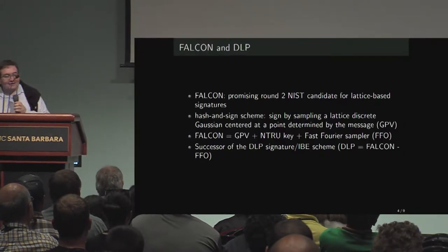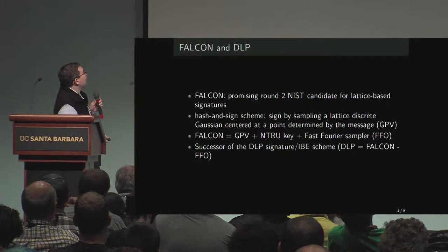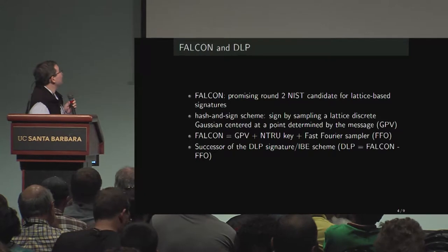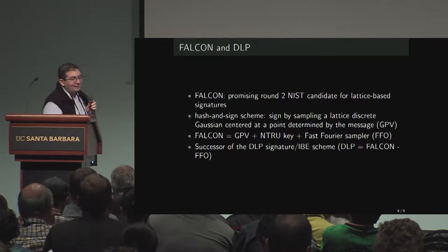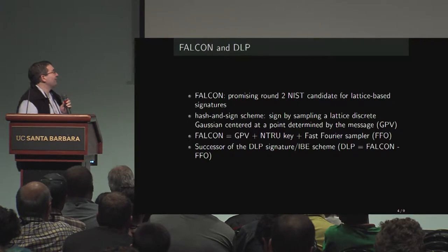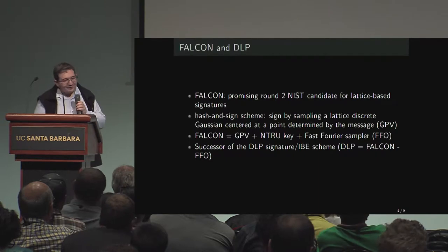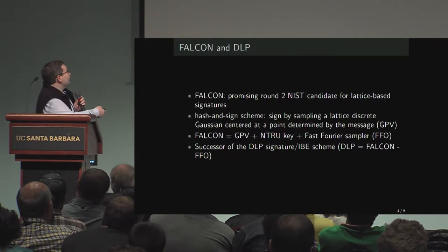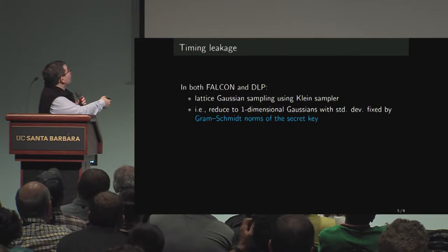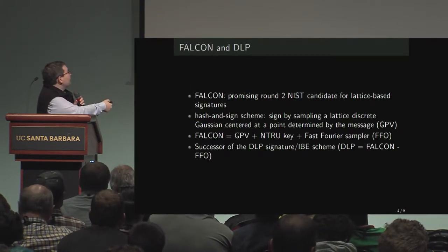Falcon, for those who are familiar with it, is a promising round 2 NIST candidate for lattice-based signatures. It's a hash-and-sign scheme, which means that you sign by sampling a lattice discrete Gaussian centered at a point determined by the message. Basically, to express it as a formula, it's GPV — the original lattice-based hash-and-sign signatures.